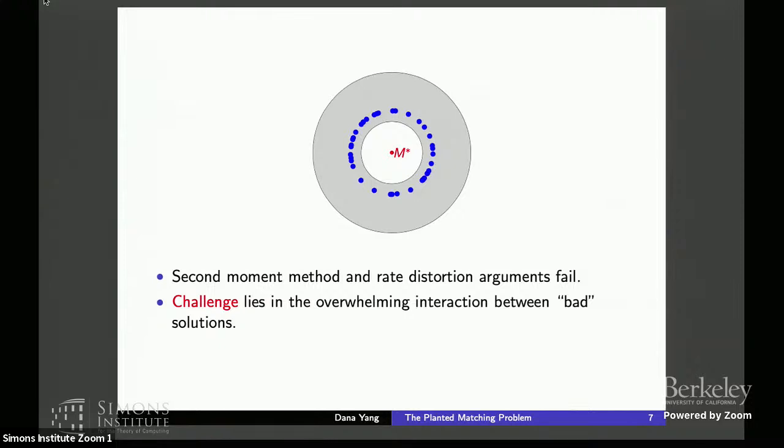And here is sort of a cartoon explaining the challenge in the analysis. Basically, to obtain a sharp statistical limit, you are forced to look at the posterior distribution. In particular, you must look at what is the posterior mass of those matchings that are a fair distance away from the truth. And because those matchings, they potentially share a large number of edges and the interactions must end up being just overwhelming for us. And that means we had to develop some new proof strategies in order to obtain a sharp analysis on the posterior distribution.